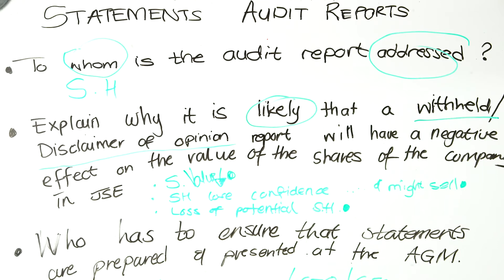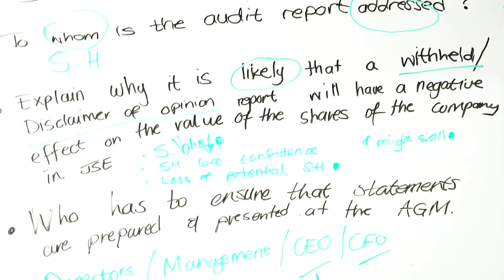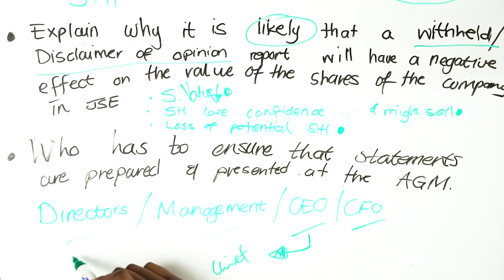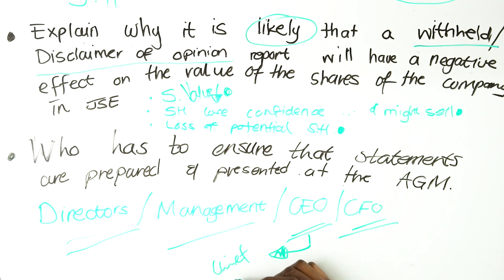Lastly — not to say these are the only questions, but these are the most popular — who has to ensure that statements are prepared and presented at the Annual General Meeting? That is your directors, your management, the CEO (Chief Executive Officer), and the CFO (Chief Financial Officer).